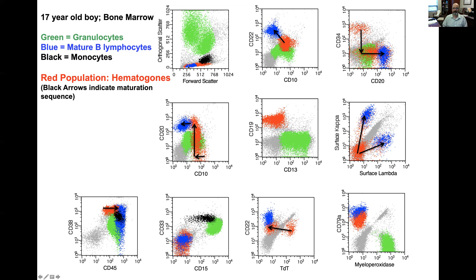In terms of the forward and side scatter, they don't have much granularity. This red population varies from small cells up to about medium-sized cells, maybe a few large ones sometimes — so they are variable in size. Eventually they go down to the size of a mature B lymphocyte. And if you look at CD19 versus forward scatter, once you get used to looking at these, you'll almost always know that there are hematogones in the specimen.